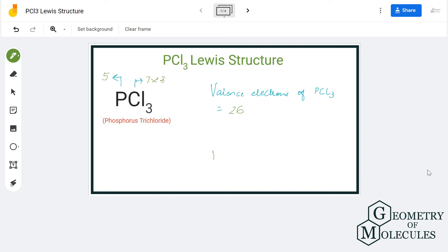Now that you know the valence electrons for PCl3, we'll place phosphorus in the center and arrange all chlorine atoms around it. To show the bonds between phosphorus and chlorine, we'll place two electrons, which represent a single bond formation. We have used six out of 26 valence electrons and are left with 20.